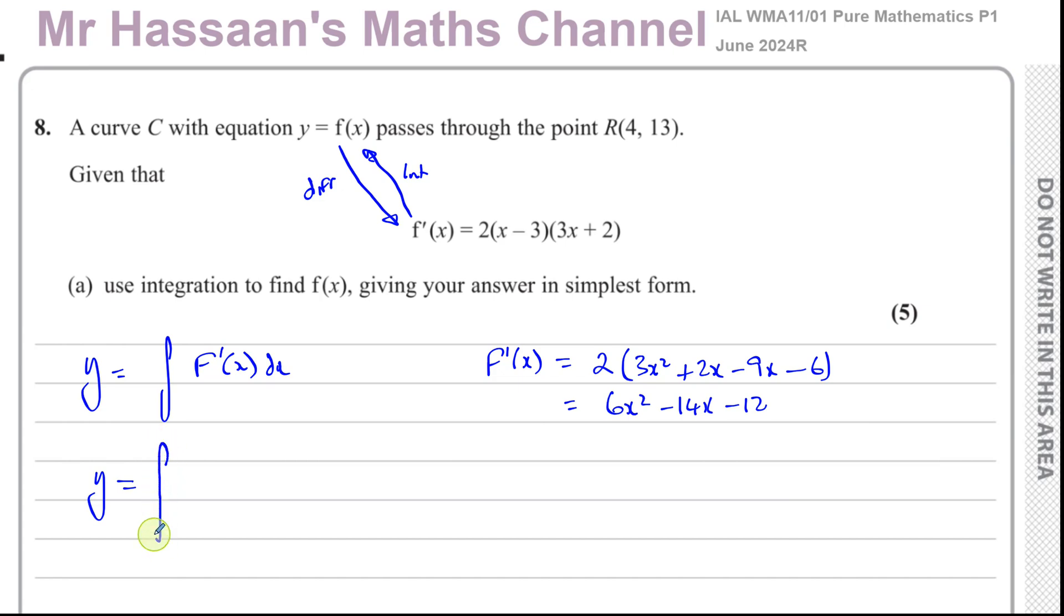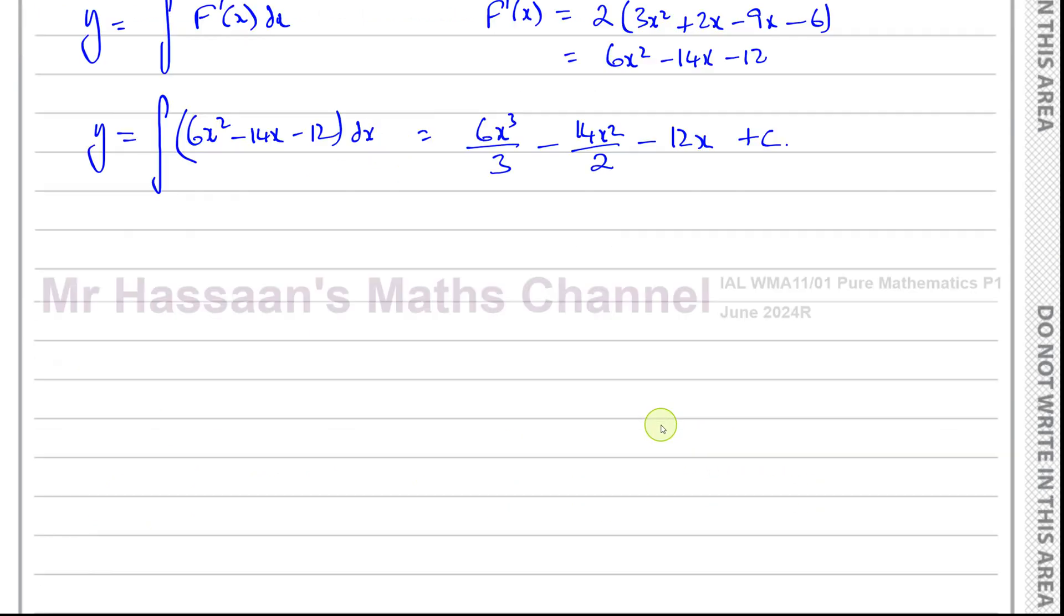Now we're going to integrate 6x² minus 14x minus 12. We should put it in a bracket here so that all of that is integrated with respect to x. That will give us y, but we have to have a plus c at the end. That's going to give us 6x³/3 minus 14x²/2. Add 1 to the power, divided by the new power. Minus a constant term will just gain an x, and then you must put plus c.